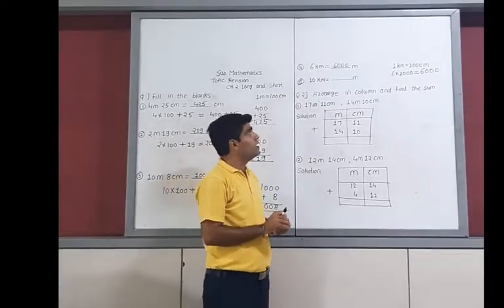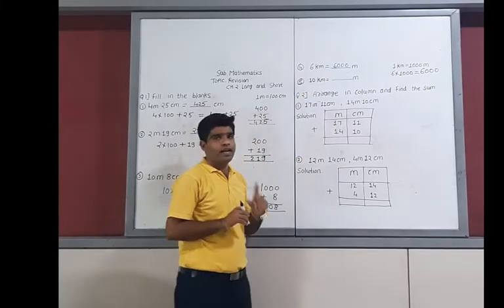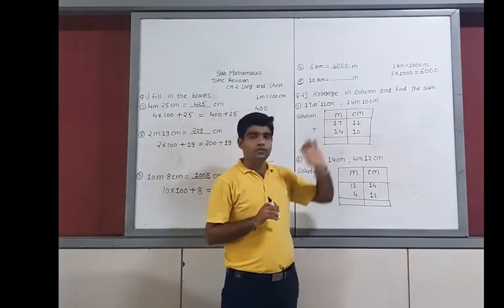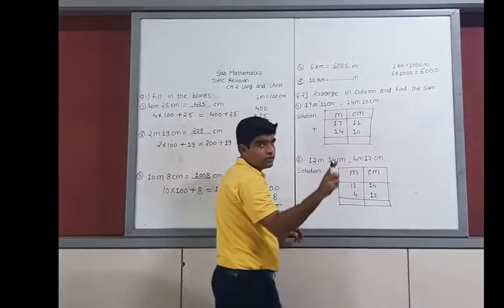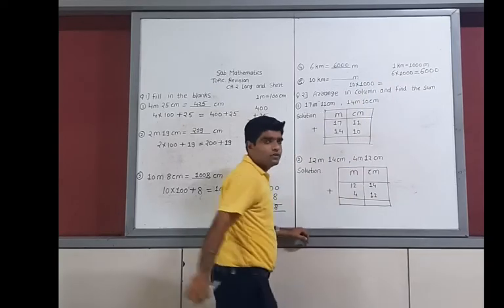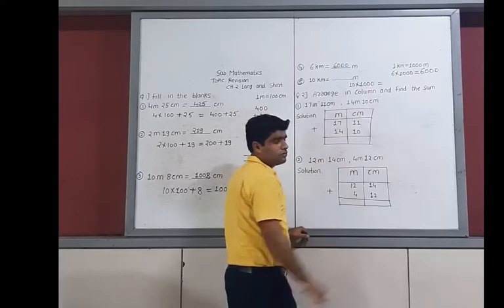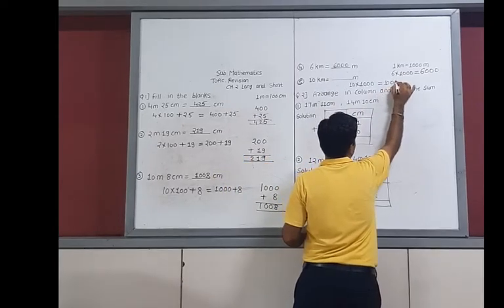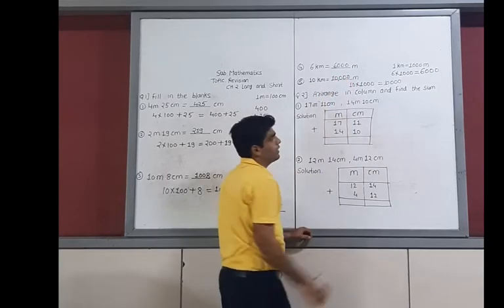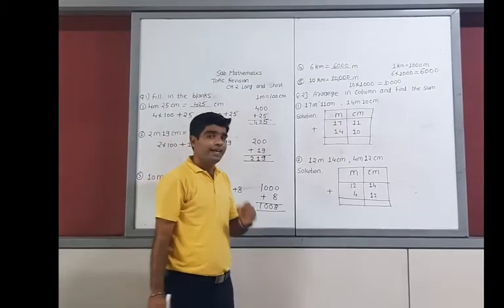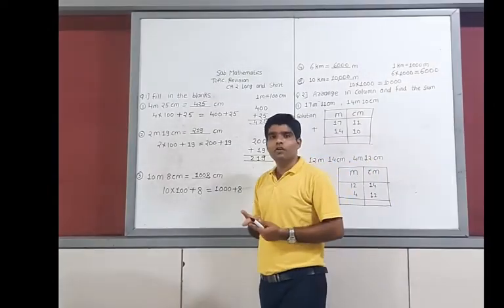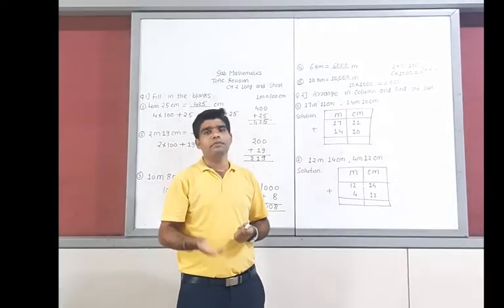Now question number 5: convert 10 km into meters. 1 km equals 1000 meters, so 10 multiplied by 1000. Counting zeros: 1, 2, 3, 4 — your answer is 10,000 meters. 10 km is converted into 10,000 meters. Similarly, 2 km would equal 2000 meters.